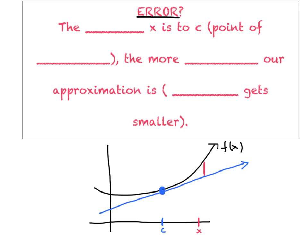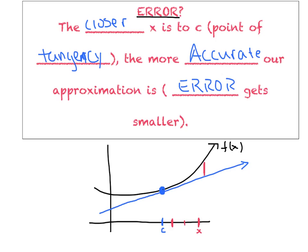The separation between the two curves would represent the error. So let's go ahead and fill in these blanks. Basically, the closer x is to c, and remember c is the point of tangency, the more accurate our approximation is. In other words, the error gets smaller. We're going to kind of put some limits on how far we let x wander away. We want to stay as close to c as possible. If I pick these points right here, x sub 1 would be better than x sub 2, and x sub 2 would be better than x sub 3.